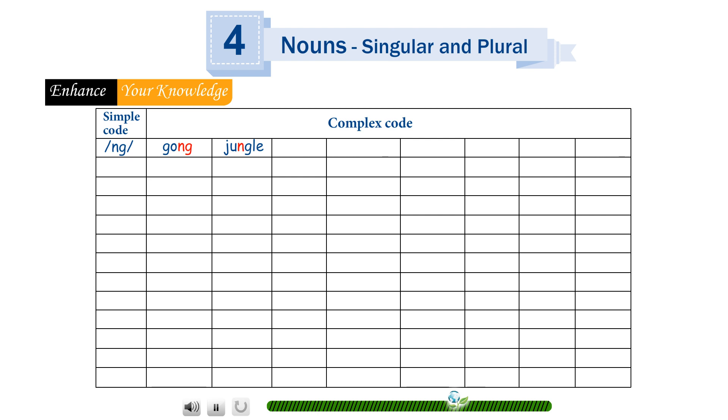oo - book, should. oo - moon, blue, flute, crew, fruit, soup, move, through. sh - sheep